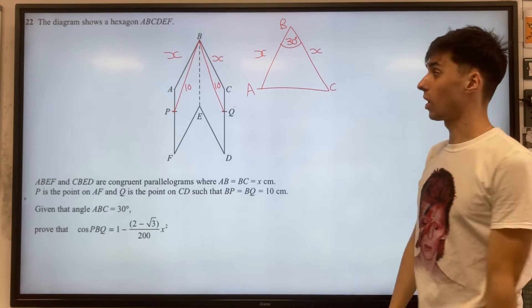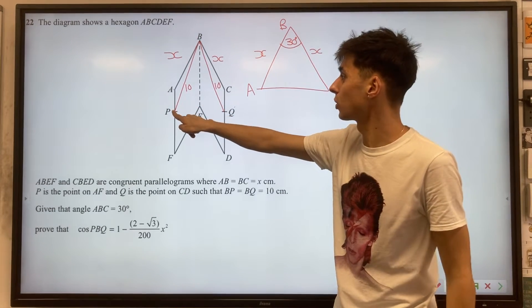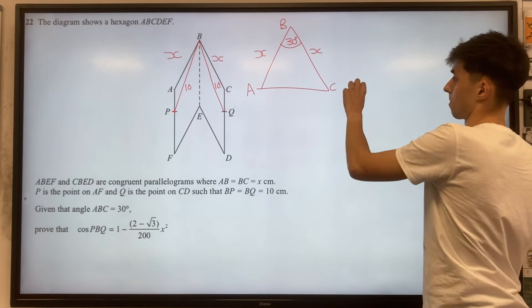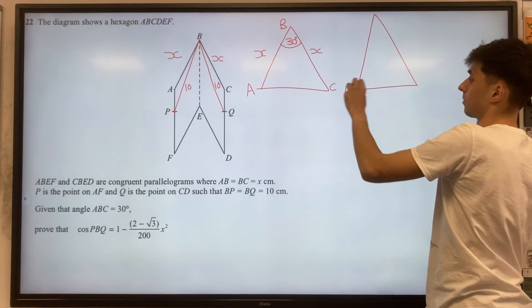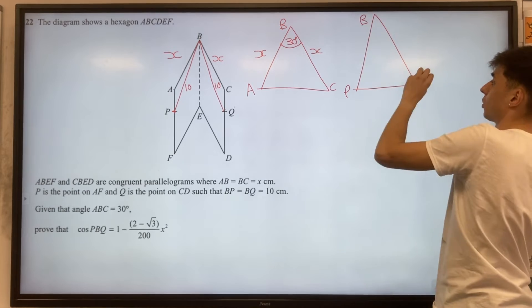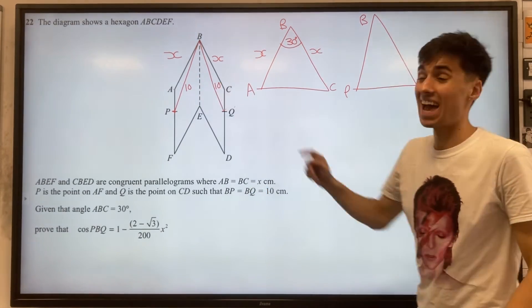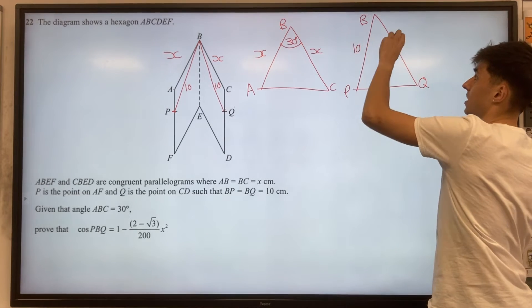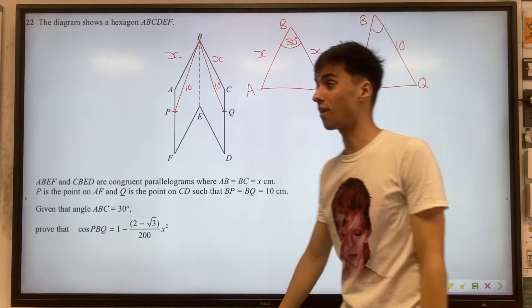Well, likewise, we have a similar triangle, not literally similar, but a similar looking triangle PBQ. So P, B, Q, and a side on PBQ are 10 and 10. So 10 and 10. We don't know the angle at the top. Actually, that's what this question wants us to find.